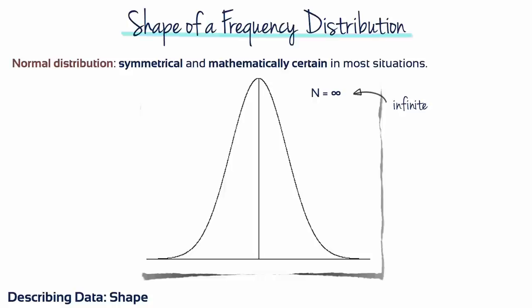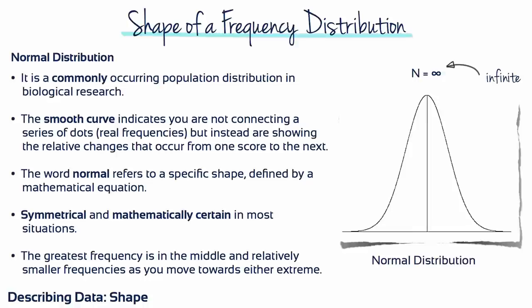This is called a normal distribution. It's also sometimes called a Gaussian or bell-shaped distribution. Statisticians use the word normal to describe this particular shape of distribution. It's symmetrical, with the greatest frequency in the middle and relatively smaller frequencies as you move towards either extreme.